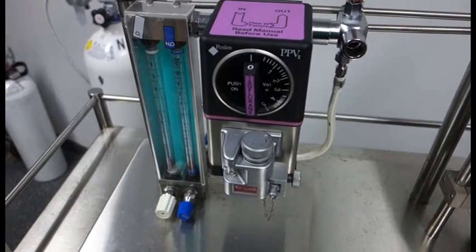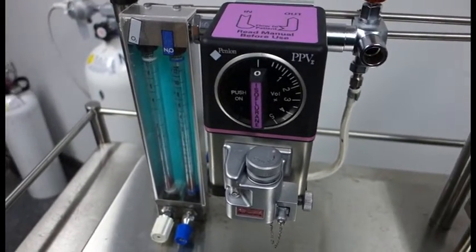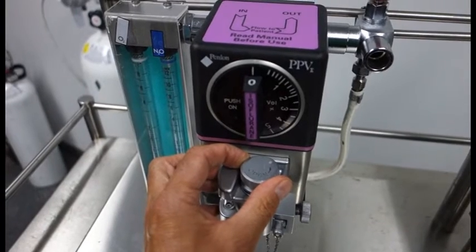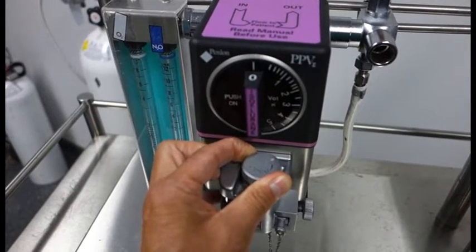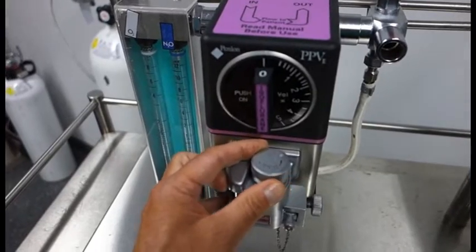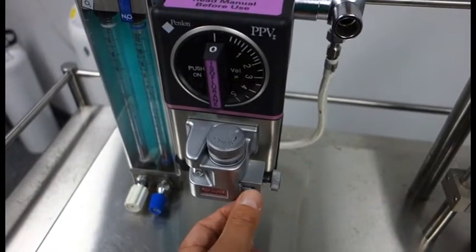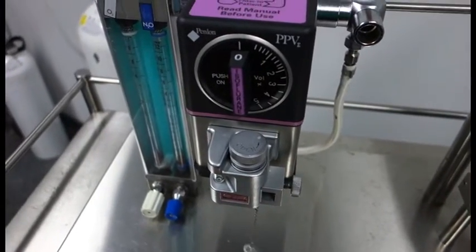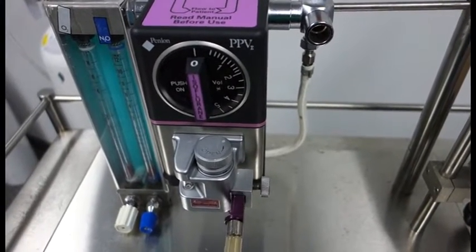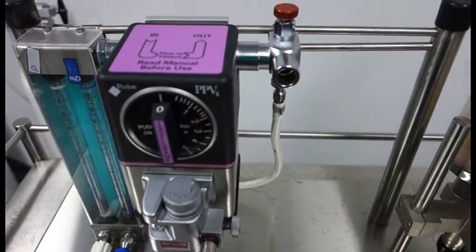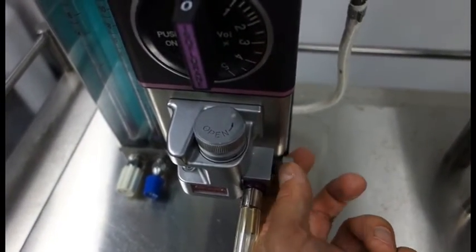Here we have our vaporiser mounted on the anesthetic machine. In order to fill this up, it's currently empty. We need to first ensure that this valve at the top here is turned to the closed position, so we turn that clockwise as far as it will go. We then unscrew this knob here on the side, and that allows us to take this slide out. That enables us to insert the keyed end of the vaporiser. It will only go in in one direction. Then we tighten up this screw here to lock that into place.